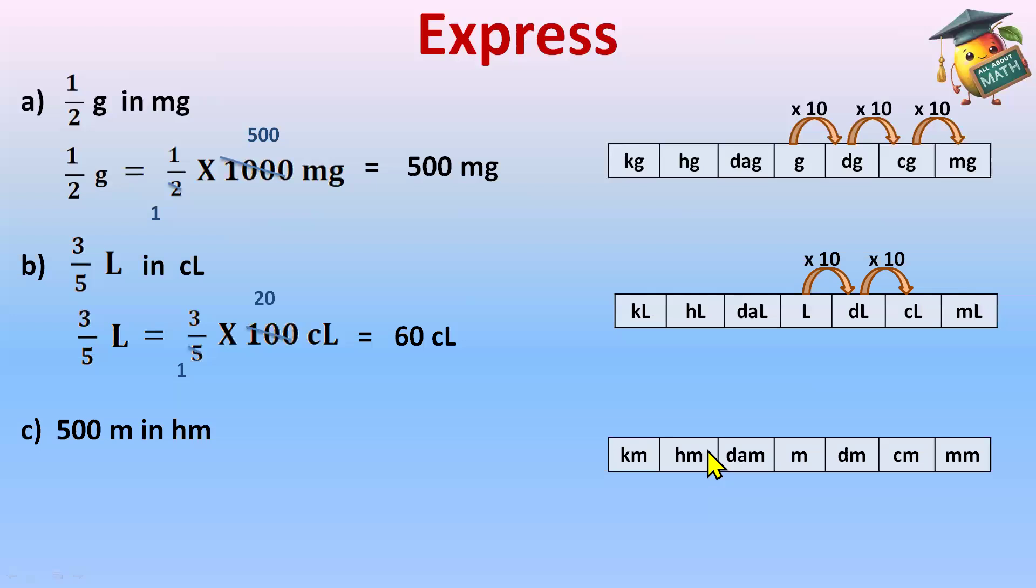We are moving from meters because we are converting from meter to hectometer. Meter to hectometer, we are going back this time, from right to left. Meter to decameter, then decameter to hectometer. In this case, we'll divide 10 each step.